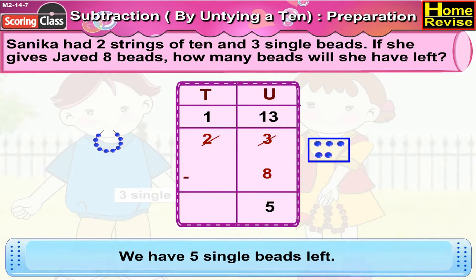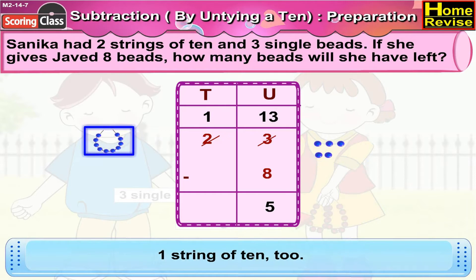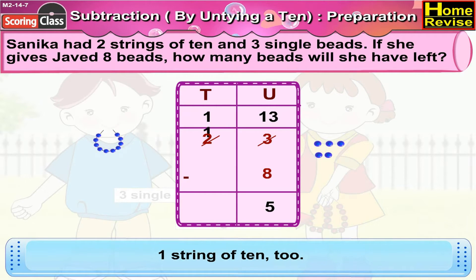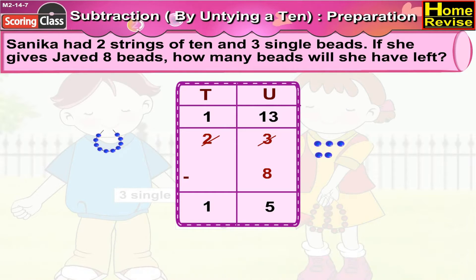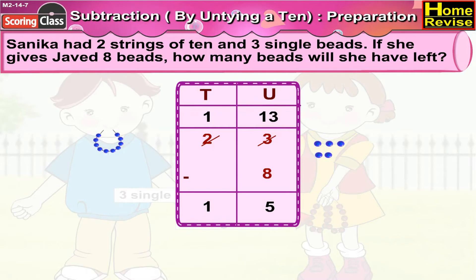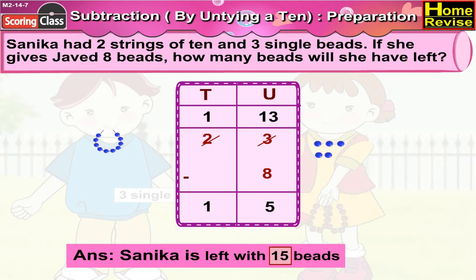We have five single beads left and one string of ten. As you notice in this sum, thirteen minus eight is five, one minus zero is one. So Sonika is left with fifteen beads.